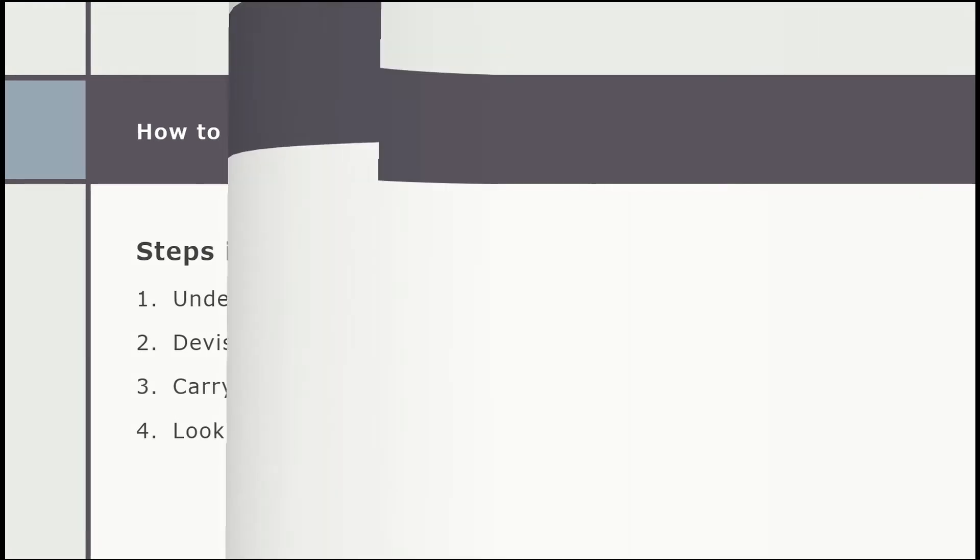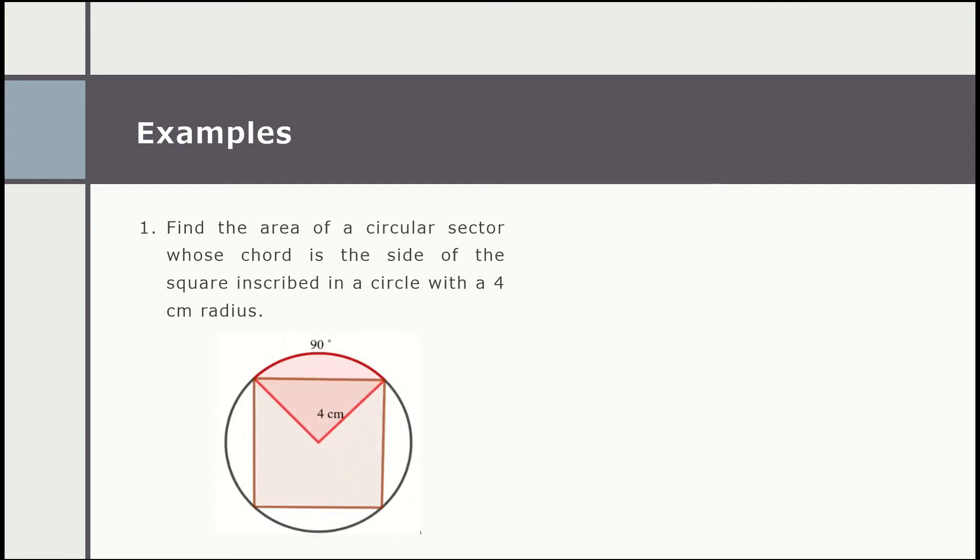Let's take a look at some examples. Example number one: find the area of a circular sector whose chord is the side of the square inscribed in a circle with a 4 cm radius. The given problem talks about the area of a circular sector.